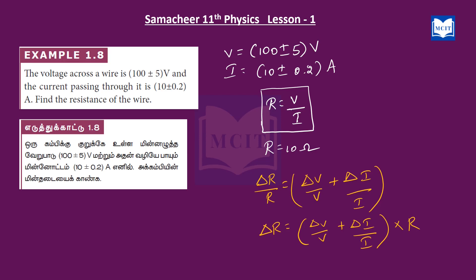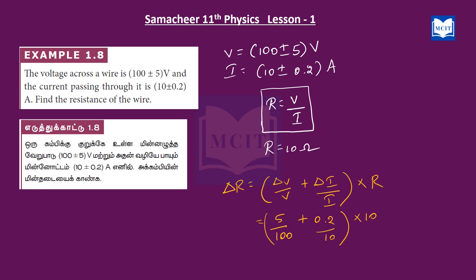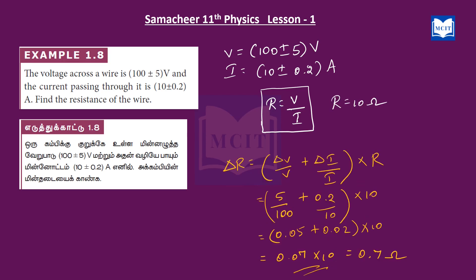First we find R: R equals 100 divided by 10 equals 10 ohm. Next, delta R equals (delta V by V plus delta I by I) into R. Substituting: delta V is 5, V is 100, so 5/100 equals 0.05; delta I is 0.2, I is 10, so 0.2/10 equals 0.02. Adding: 0.05 plus 0.02 equals 0.07. Then 0.07 multiplied by 10 equals 0.7.